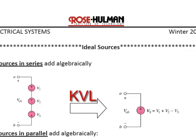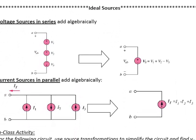Voltage sources in series add algebraically, based upon KVL. So if you have V1, V2, and V3, where V1 and V2 are positive on top — which are voltage rises — and V3 is negative on top — which is a voltage drop — then algebraically, you can combine those to get a net voltage source V1 plus V2 minus V3. The other simplification technique is for current sources.